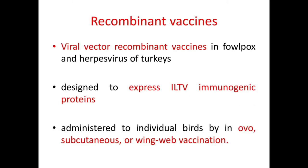Recombinant vaccines are viral vector recombinant vaccines in fowlpox and herpes virus of turkeys, designed to express ILT virus immunogenic proteins. These are administered to individual birds by in ovo, subcutaneous, or wing web vaccination.